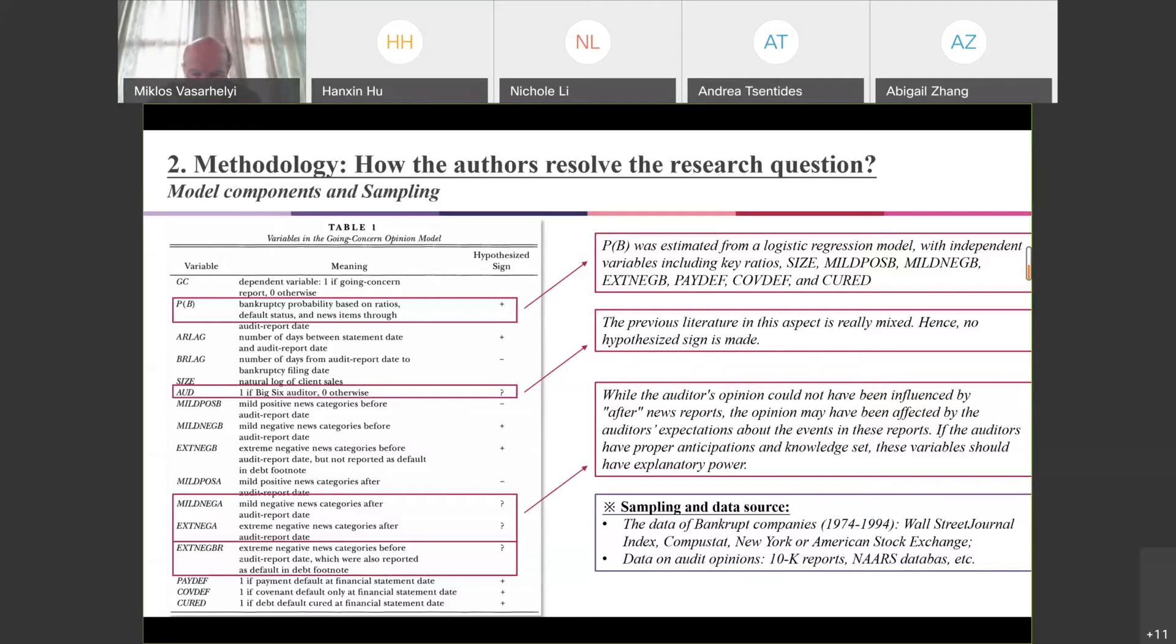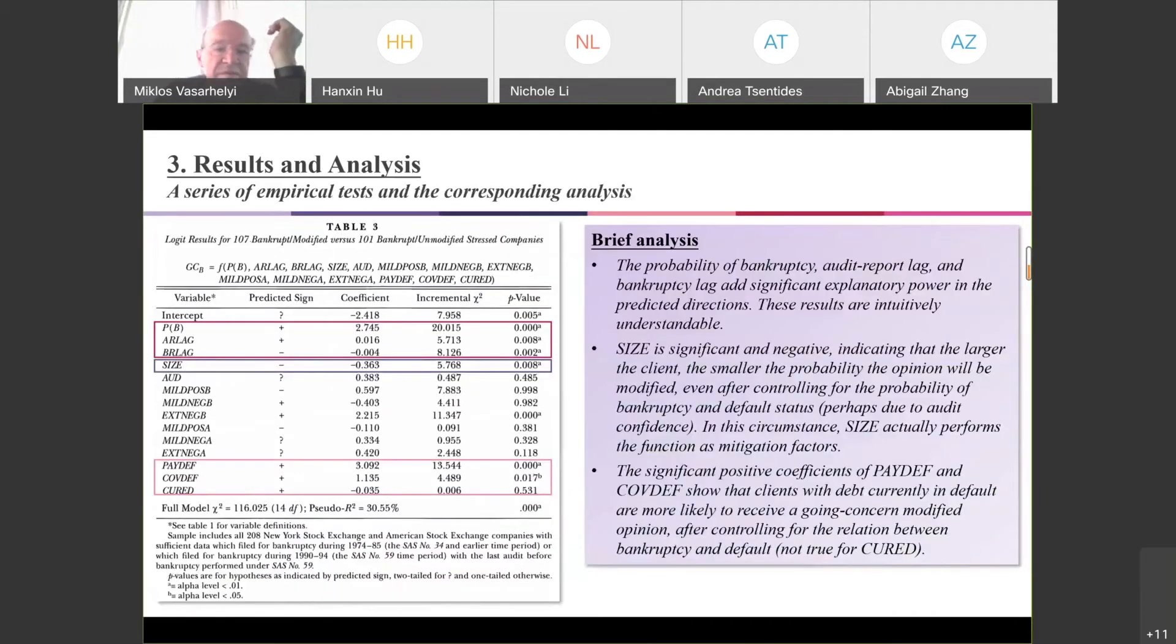Size and payment defaults are also variables included in the logistic regression. The author would like to explore the effects of size and mild positive events when controlling the probability of bankruptcy. The second important variable is whether it's a Big Six auditor or not, because the previous literature in this aspect is really mixed. Hence, you can see that no hypothesized sign is made.